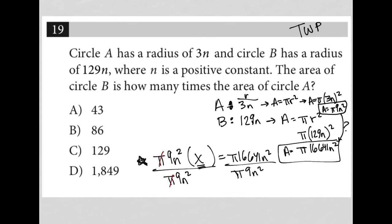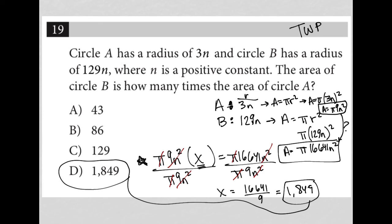In doing so, my pi's cancel out. My 9n squared is on that side, but my n squared is only on this side. And basically, what I'm left with is that X equals 16,641 divided by 9. So I'm going to go to my calculator and put that in - 16,641 divided by 9 - and I am getting 1,849. Therefore, the correct answer here is choice D.